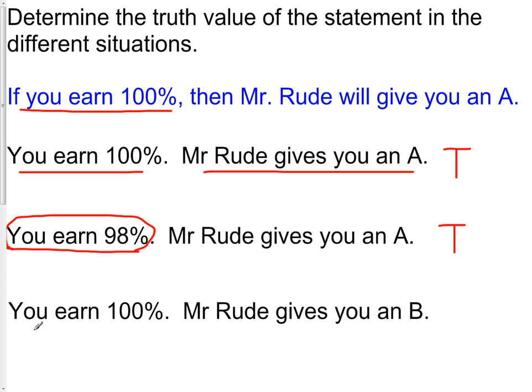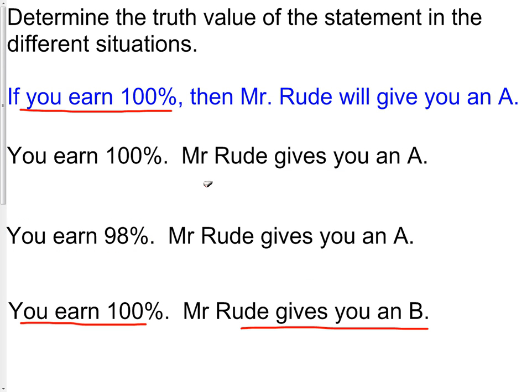In our final example, it says you earned 100%. Mr. Rude gave you a B. This is very different than the second example. In the second example, we got 98%. He could give you an A, he could give you a B, he could give you whatever he wanted. But in this example, that's not the case. Because you earned 100%, we have a rule that says when you earn 100%, you get an A. On this test, you earned 100% and Mr. Rude gave you a B. This is a false example. He has violated the rule. So that should not happen.